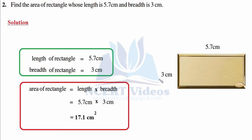Area of rectangle = length × breadth. Therefore 5.7 cm × 3 cm. The unit will be centimeter square — that is centimeter × centimeter — which is what the squared sign means over the unit of measurement. In case of a cuboid it would be cubed. Now multiply: forget the decimal, just multiply the numbers. 7 × 3 is 21, 2 carry. 5 × 3 is 15 plus 2 is 17. Count the decimals — here it is only 1 decimal point — so place after 1 digit: result is 17.1 cm².